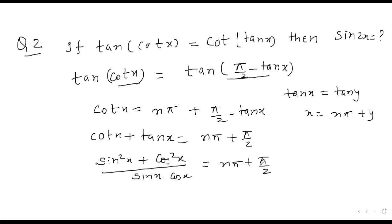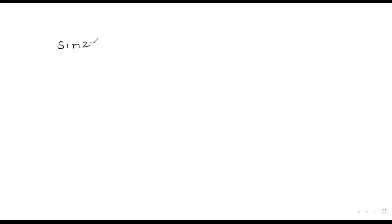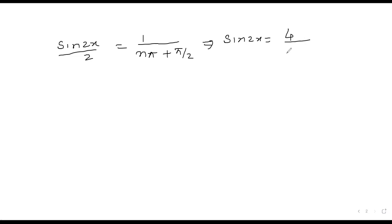Further, 1/(sin x cos x) = nπ + π/2. Multiplying by 2: 2/(sin 2x) = nπ + π/2. This can be rearranged as sin 2x / 2 = 1/(nπ + π/2).